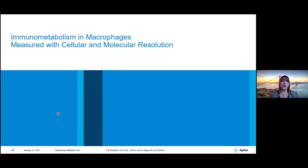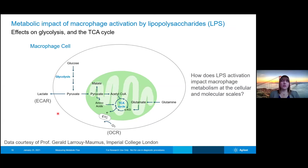The first example I'll focus on is metabolism in macrophages, in particular when they're undergoing activation. We're going to look at this with both cellular and molecular resolution — both the seahorse and LC-MS resolution. To give a general view of what is going on in these cells, we have macrophage cells, and in this example we're going to focus in on glycolysis and the rates of metabolites through the glycolytic pathway.